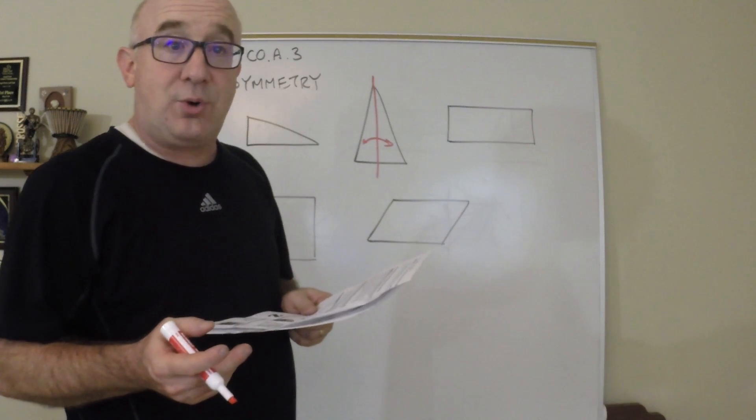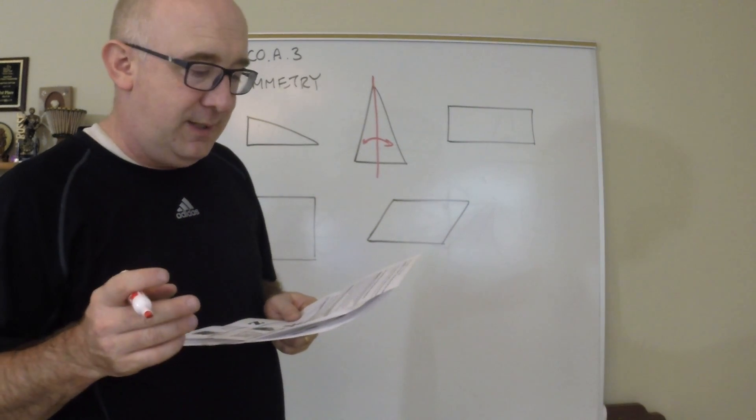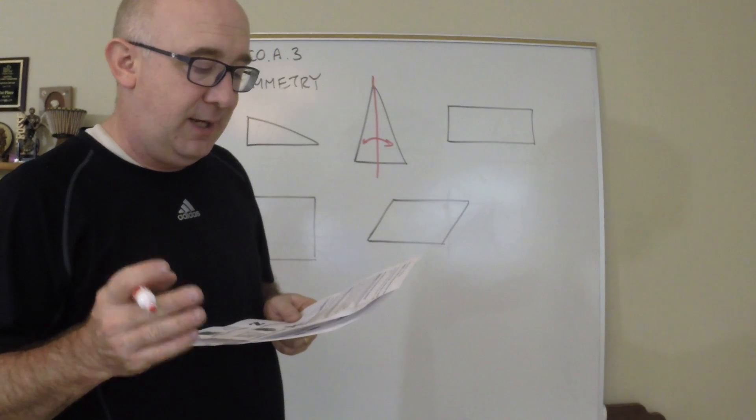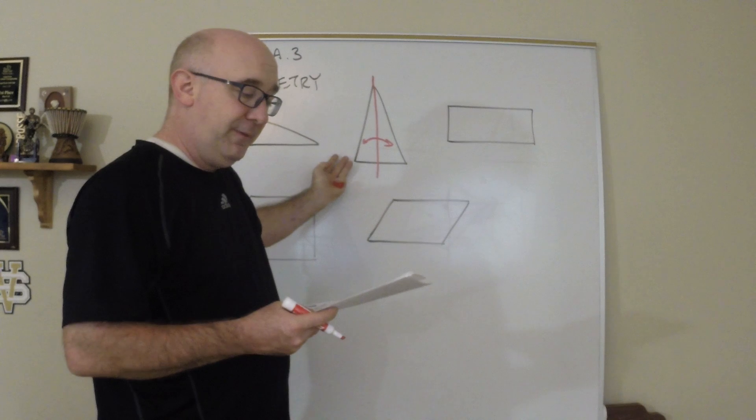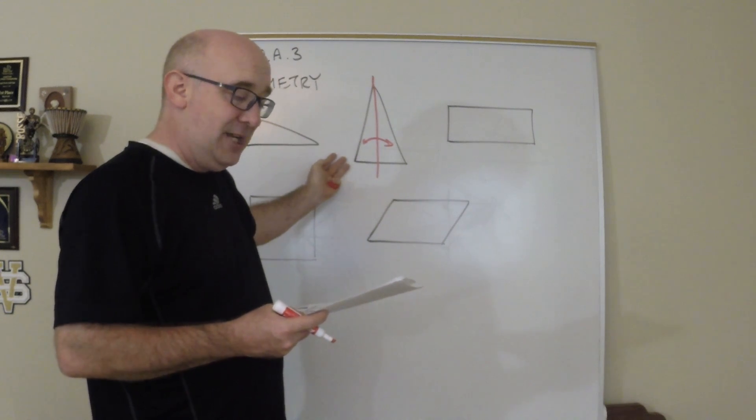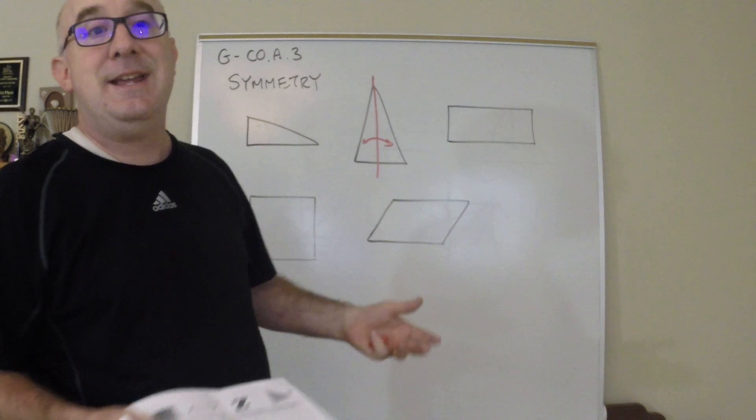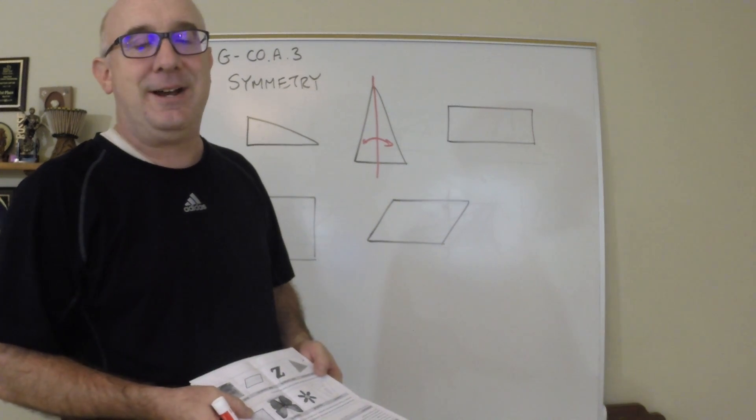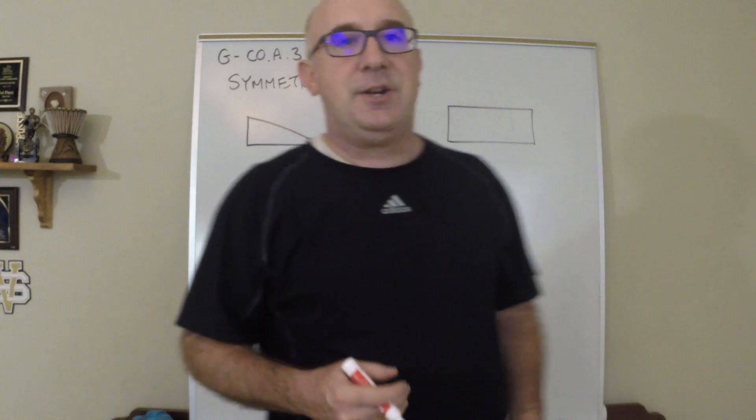Another way to describe line symmetry is the set of points has line symmetry if and only if there is a line such that a reflection through that line, each point, maps onto a point in that set or in that diagram. Lots of ways to describe line symmetry, but I think you're familiar with it.